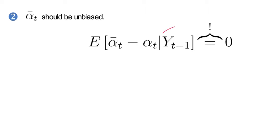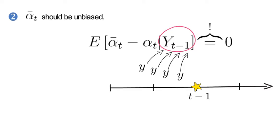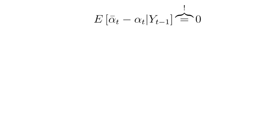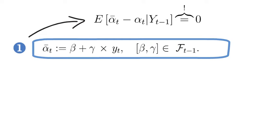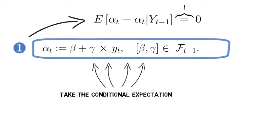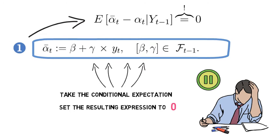Second step: we want the linear estimator alpha-bar-t to be unbiased. This condition has to hold, where capital YT-1 collects all observed measurements up to time T-1. We plug in equation 1 into the last equation, take the conditional expectation of each term, and set the resulting expression to zero. I want you to do that explicitly on your own. Pause the video and do the derivation.